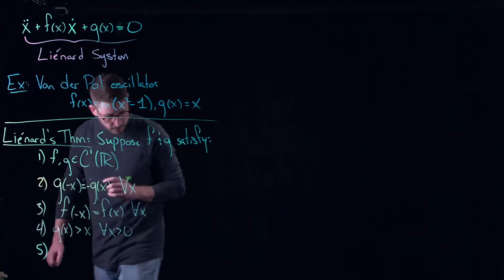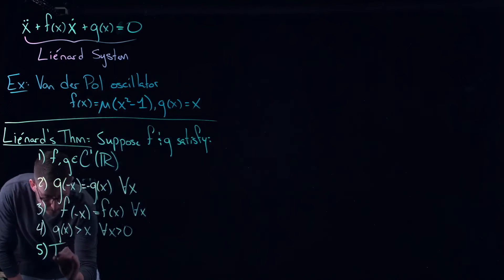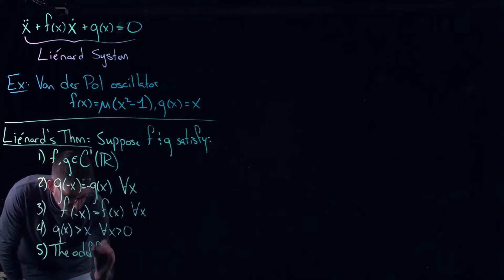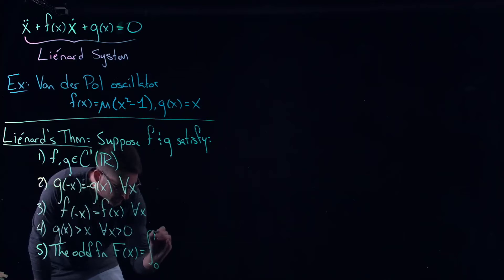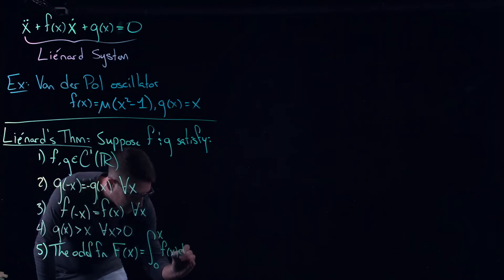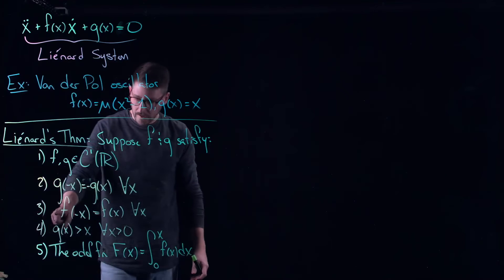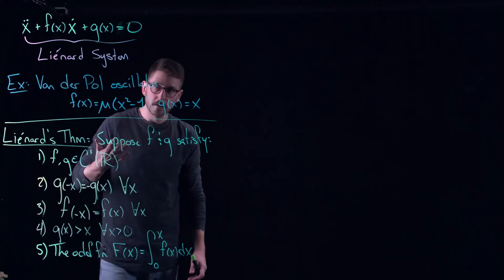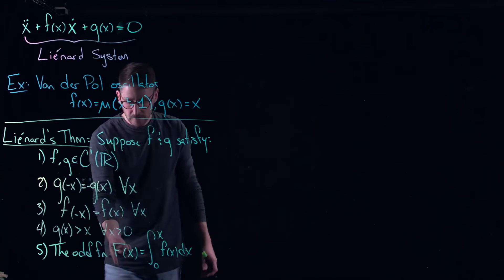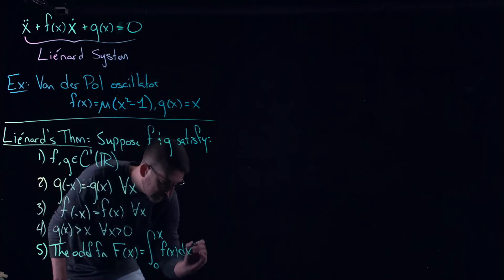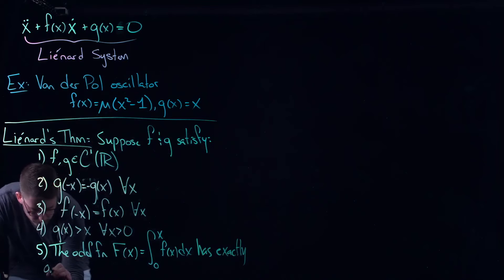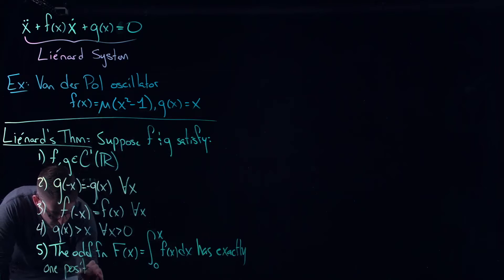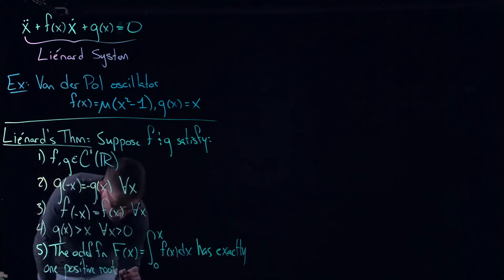Okay so these are sort of fairly easy to satisfy. You can come up with all kinds of functions that satisfy these. Here's the most sort of tedious one and this is the one that's sort of critical for the proof. We'll talk about it in a moment here. The odd function which I'm going to call F of capital X which is going to be the anti-derivative of little f of x. How do I know that it's odd? Well because little f of x is even, you take the anti-derivative in this exact way you get an odd function. Okay, has exactly one positive root at let's say x equal to a.